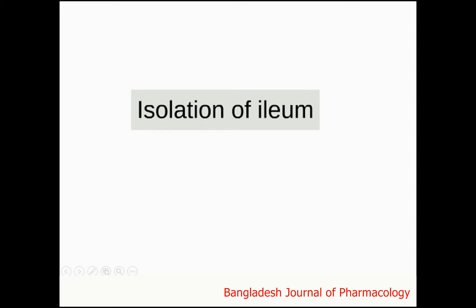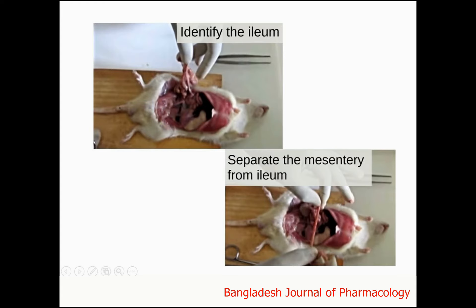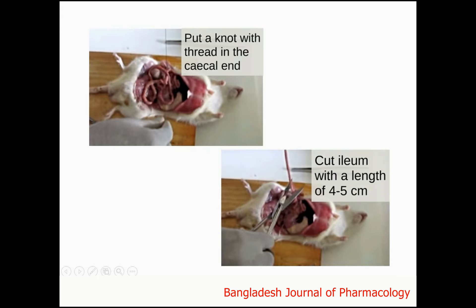The next step is the isolation of ileum. After anesthetizing the rat, cut the skin above the abdomen and expose the whole abdomen. Identify the ileum and separate the mesentery from the ileum. Put a knot with thread in the kegel end and cut the ileum to a length of 4 to 5 cm.